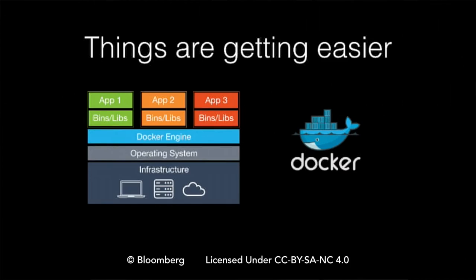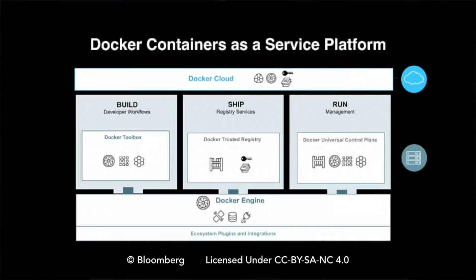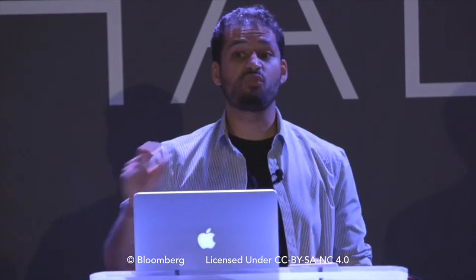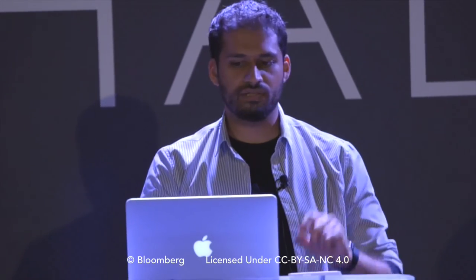Things are getting easier. Docker changed the unit of deployment — instead of having to deploy a large virtual machine, you now deploy a container on top of a shared kernel. That makes things much easier, with more consistency between a developer machine and a production machine. Docker also provides something called containers as a service, which sits between infrastructure as a service and platform as a service. Platform as a service can be a little too opinionated — it's wonderful when those opinions match your own, but real pain when they don't. Containers as a service tries to sit in between so you can make your own opinions about how you want to deploy things.